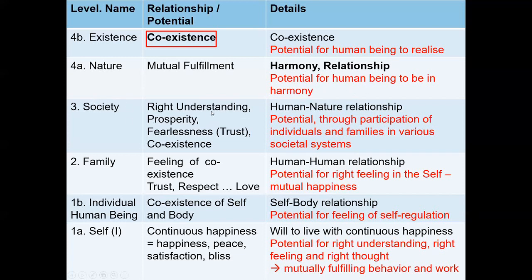At the level of society, we talked about the four human goals: understanding, prosperity, fearlessness, and coexistence — again reflections of coexistence. Right understanding means realizing coexistence; prosperity means fulfilling the coexistence of self and body rightly; fearlessness means coexistence of self with self in society — and coexistence is already there in the human-nature relationship.